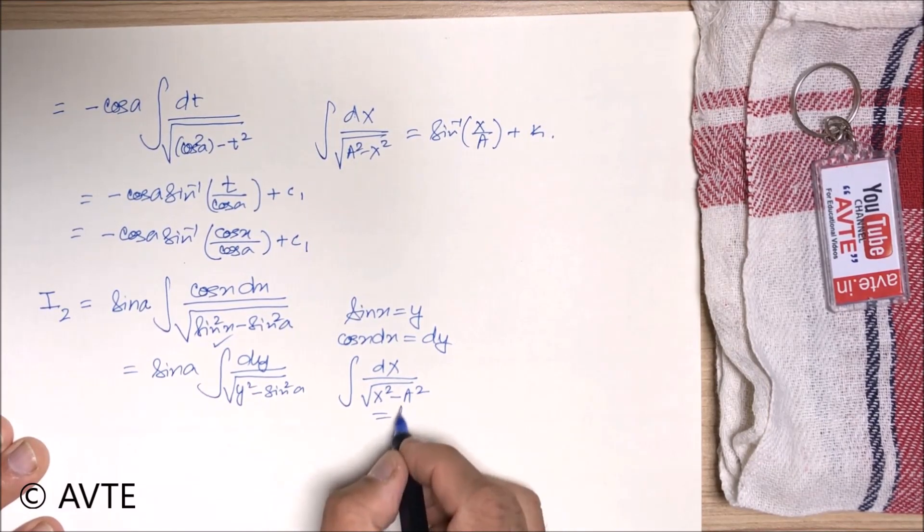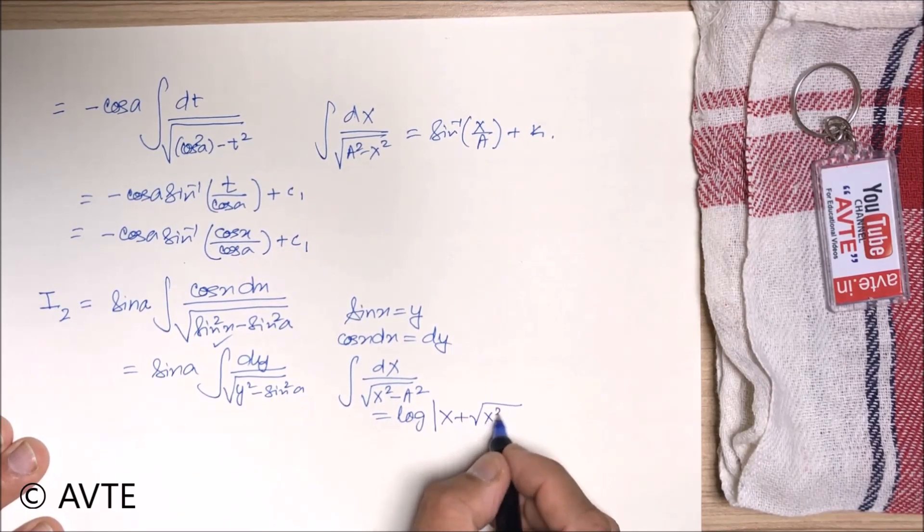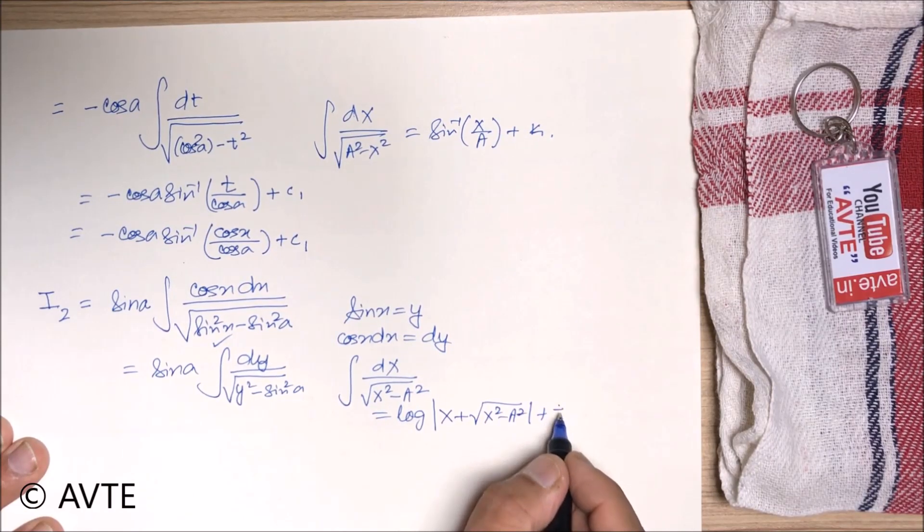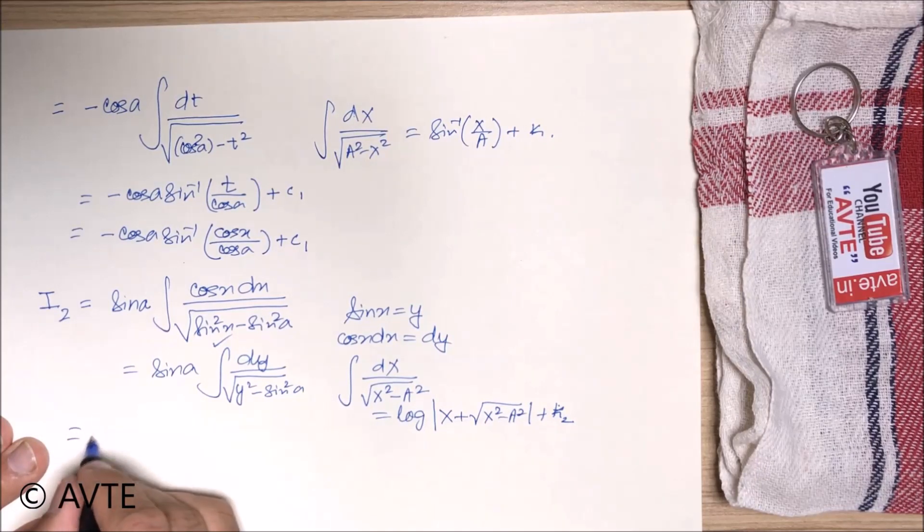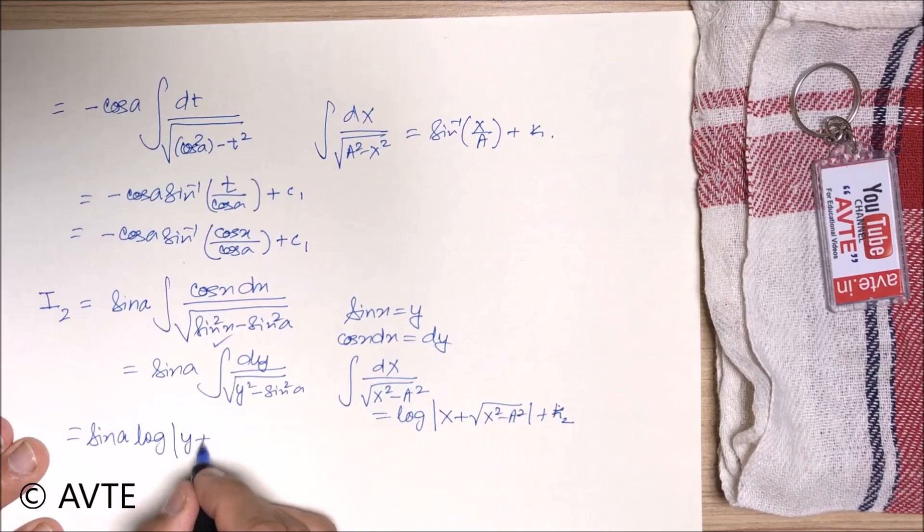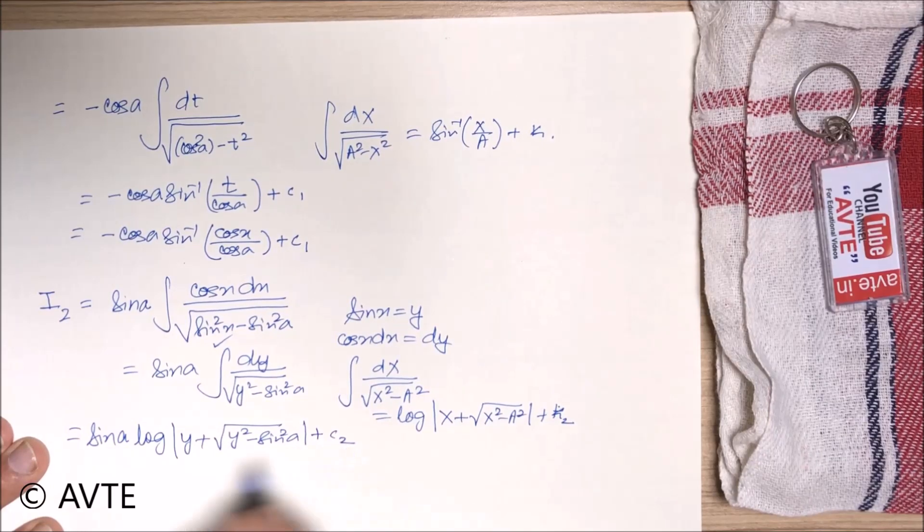And this is a special integral of the type, and you remember that is log mod x plus under root of x square minus a square plus some constant. I am using that constant as k2. Therefore the answer will be sin a log mod y plus under root of y square minus sin square a plus the second constant. And you remember what is y. It is log mod.